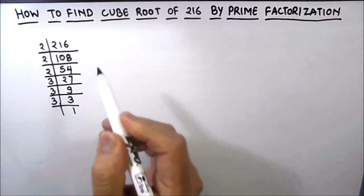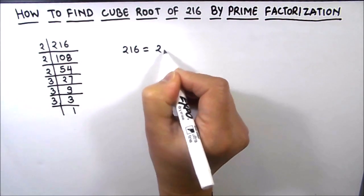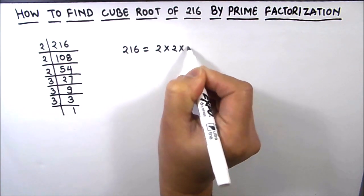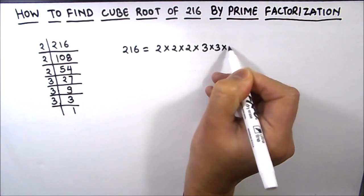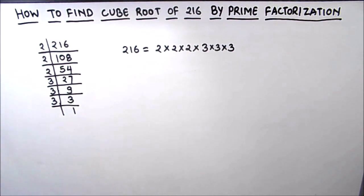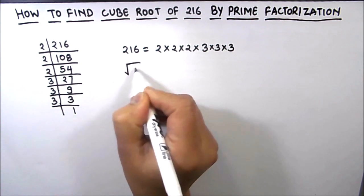Now we are going to write 216 as the product of its prime factors, which is 2 times 2 times 2 times 3 times 3 times 3. Now as we are going to find the cube root, we are going to take cube root on both sides.